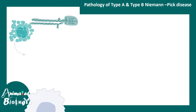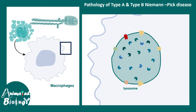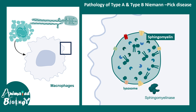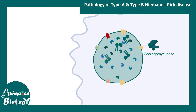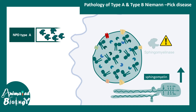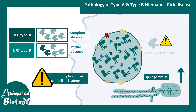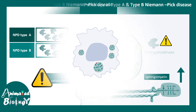In Niemann-Pick Type A/B, sphingomyelin accumulates in the lysosome of macrophages, impairing their functionality. The severity differs: Type A has complete loss of sphingomyelinase activity while Type B has partial loss. Overall, the take-home message is that sphingomyelin catabolism is abrogated.